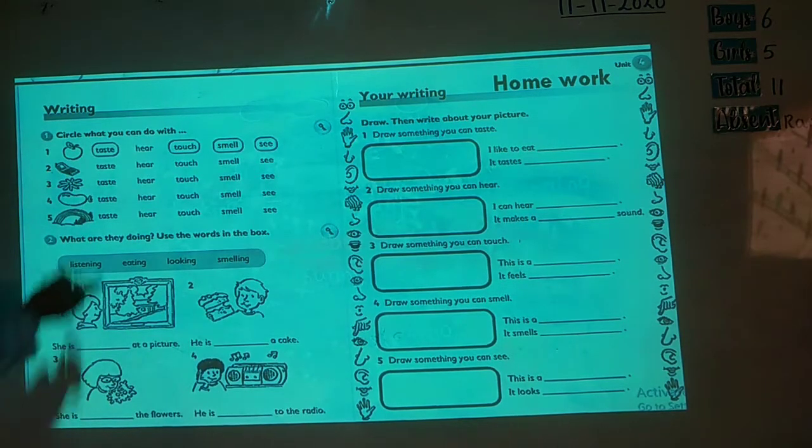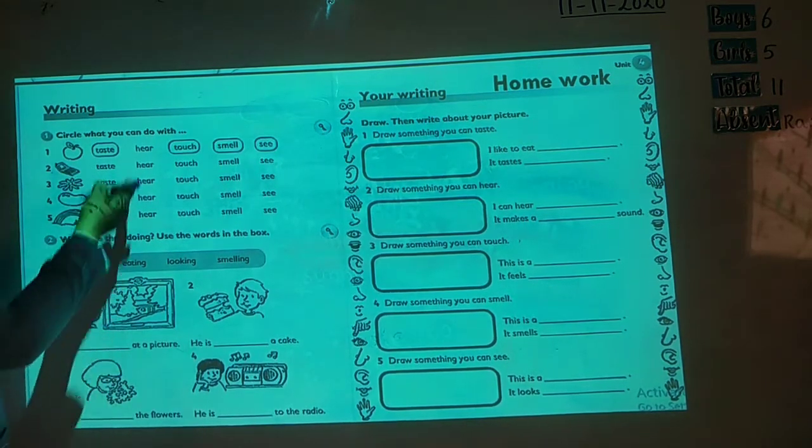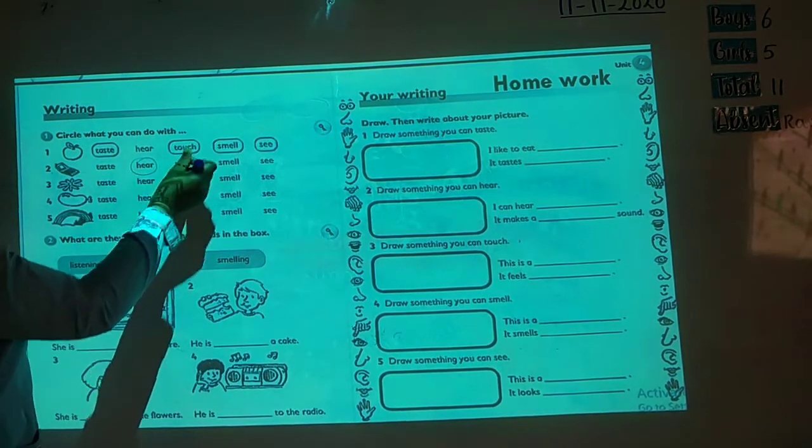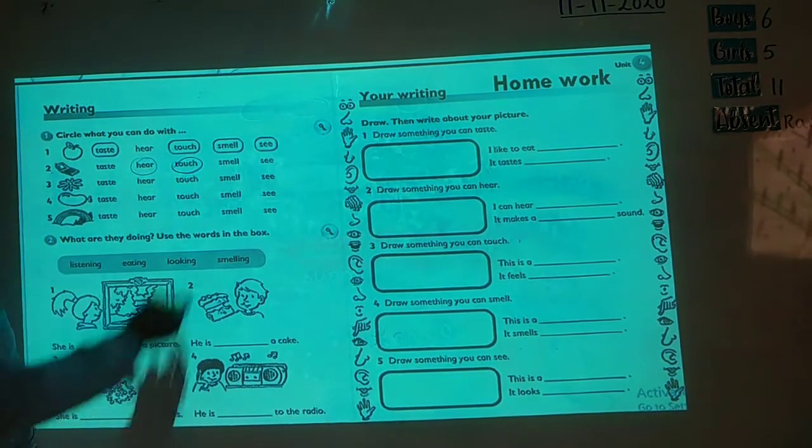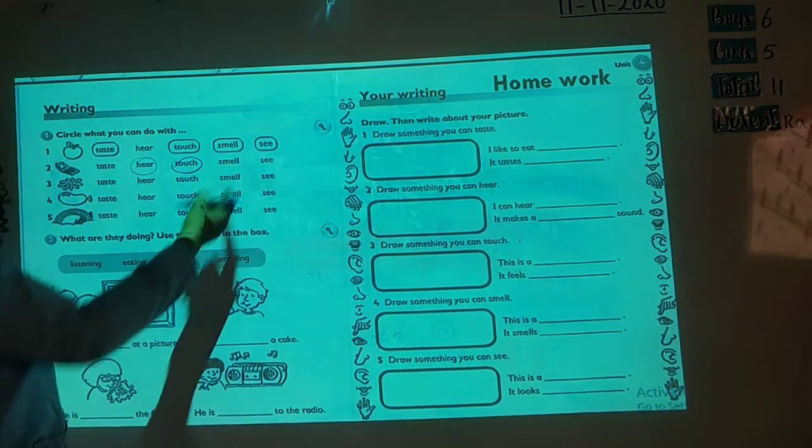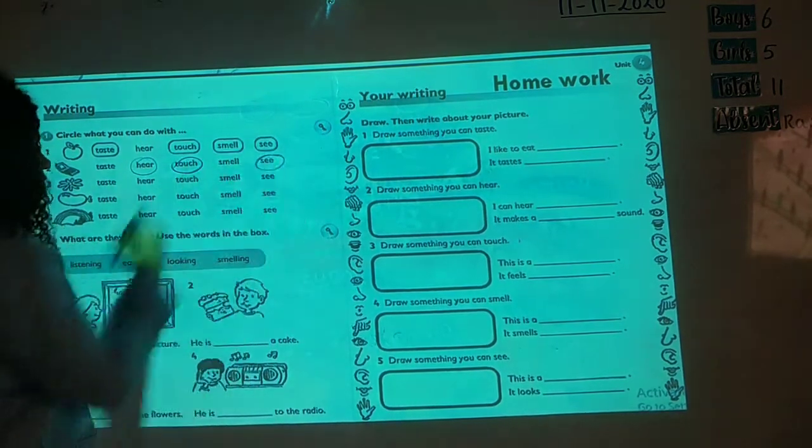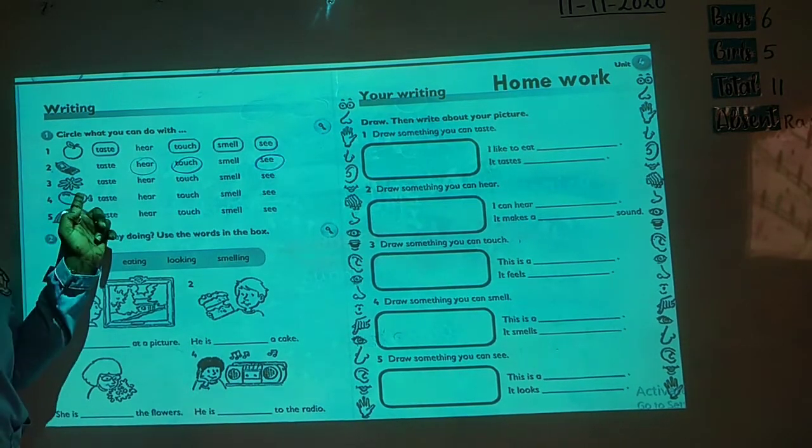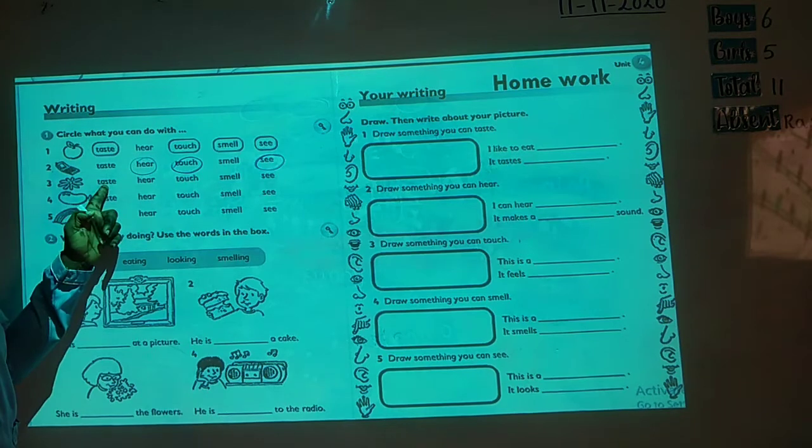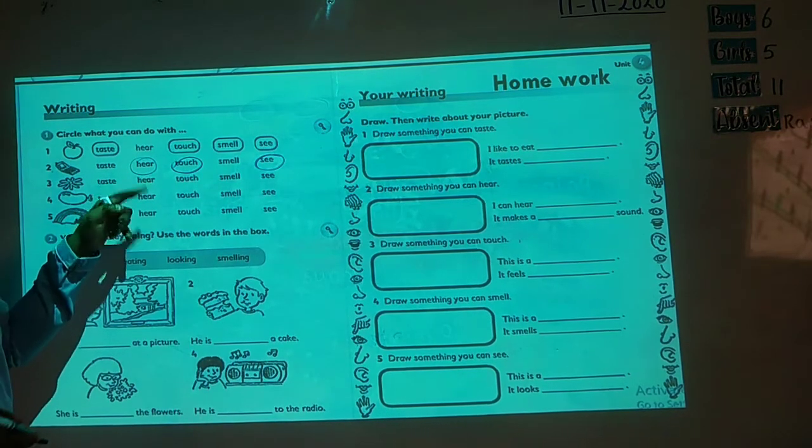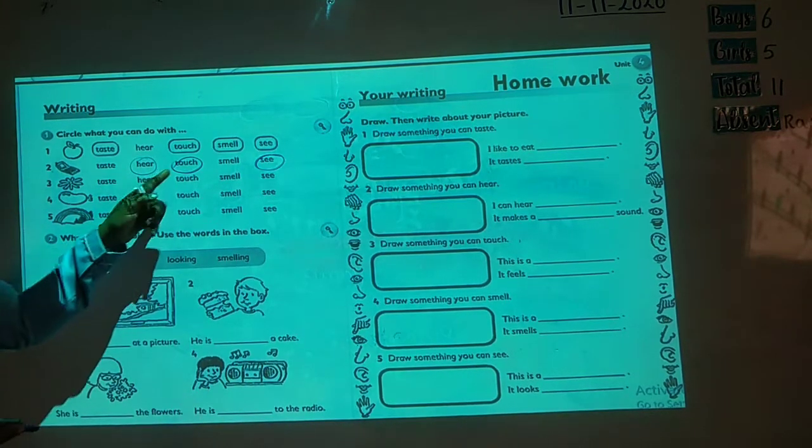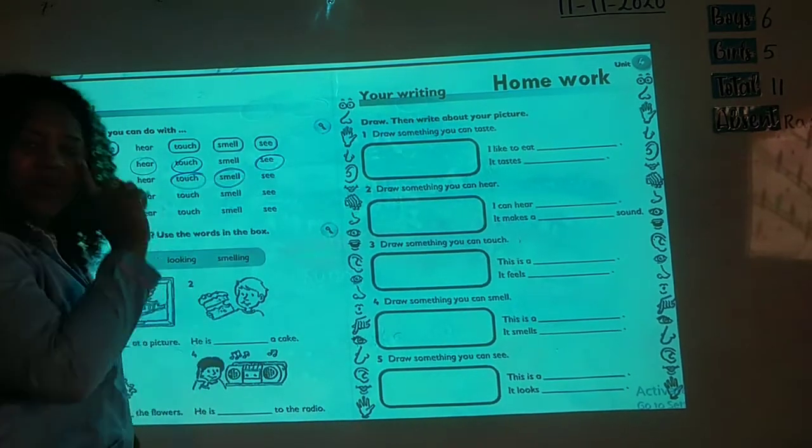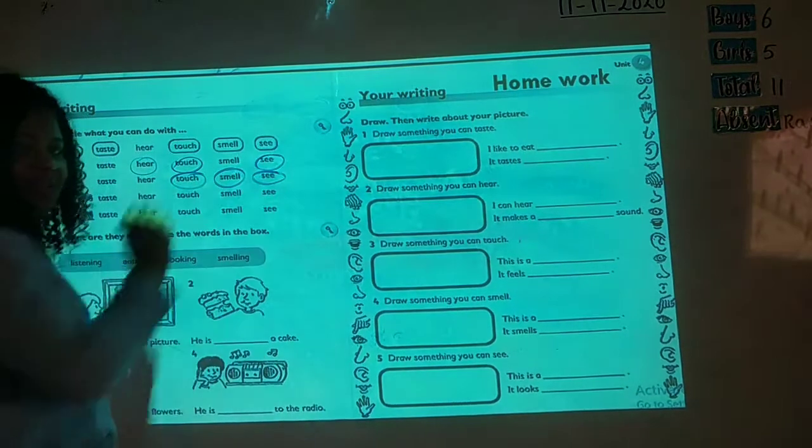Number two, phone. What do we do with phone? Do we taste phone? No. Do we hear the phone when it rings? Yes. Can we touch the phone? Yes, we can. Can we smell phone? It's not possible. Can we see the phone? Sure, we can. Number three. This is a flower. What do we do with it? Do we taste it? No. Do we hear it? No. Do we touch it? Yes, we can touch it. Can we smell it? Of course, we can smell it. Can we see flower? Yes, we can see flower.